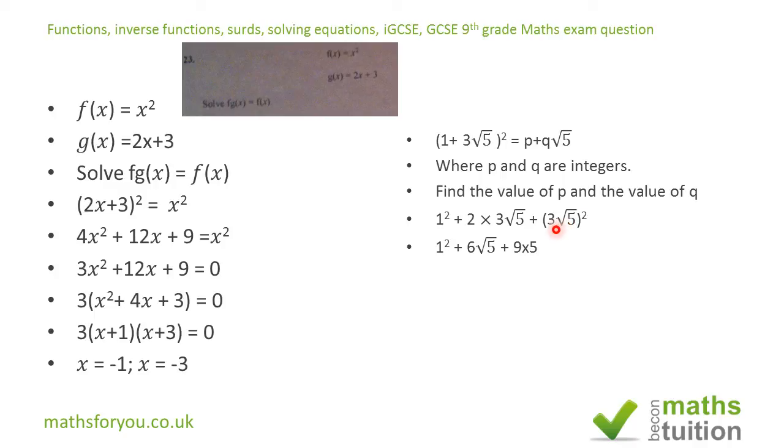Because if you square this, it becomes 9 and √5 squared is 5, so that's 9 times 5 which is 45. If we then add 1 and 45 we end up with 46 + 6√5.